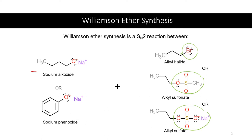How do we produce the sodium alkoxides or sodium phenoxides? We react the alcohol version of this molecule with a strong base like sodium hydroxide in order to make the alkoxide version. We use the alkoxide or phenoxide — made by reacting a phenol with a strong base like sodium hydroxide — because this group will serve as a stronger nucleophile compared to if it were just an O-H group.